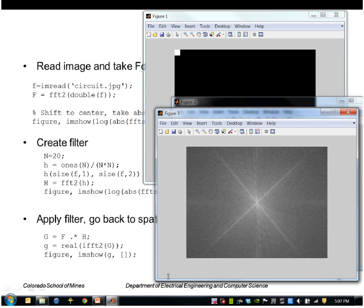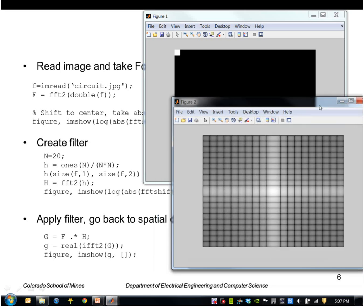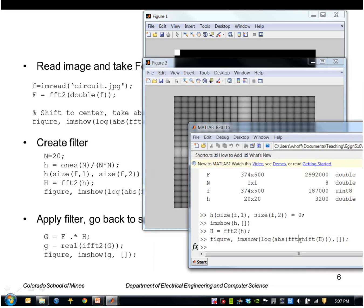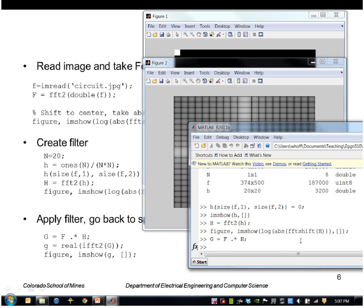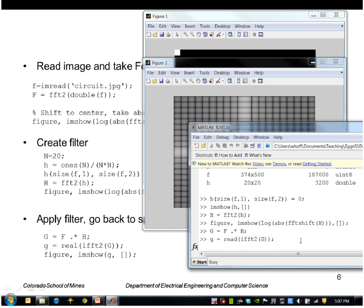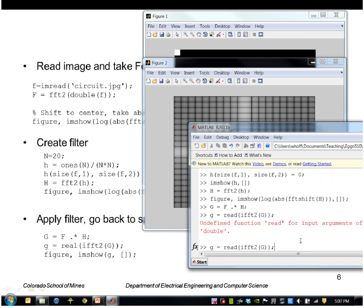Let's go and do our filtering. We do a point by point multiplication. Notice I use the dot asterisk meaning point by point instead of a matrix multiplication and I'll take the inverse Fourier transform IFFT2 of capital G.